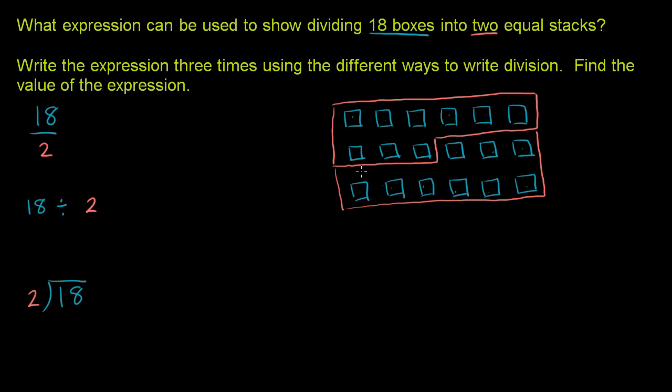So we're going to split it into two groups of 9. So 18 divided into two equal groups is equal to 9. Or 18 divided by 2 is equal to 9. Or 2 goes into 18 nine times.